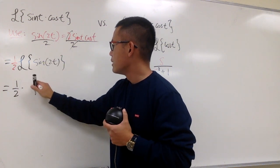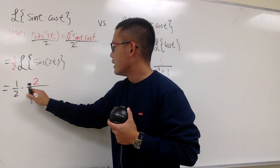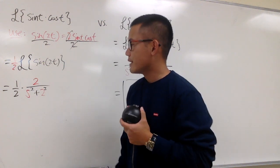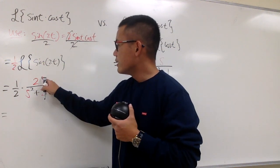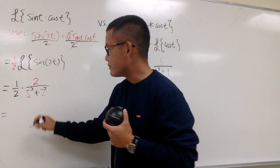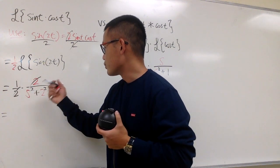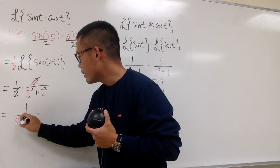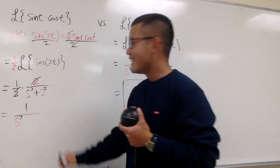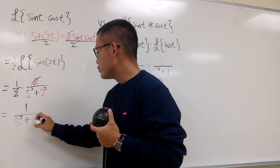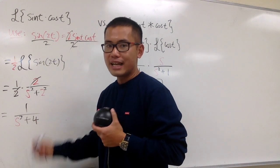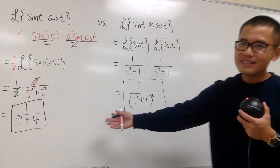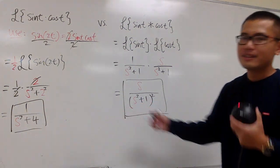We have to do the Laplace of sine 2t, which gives 2 over s squared plus 2 squared. This 2 and that 2 cancel out, so we have 1 on the top over s squared plus 4. And we are done for this one as well. Which one did you guys like better? Let me know.